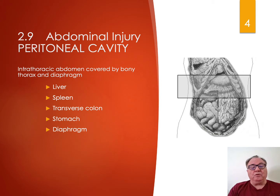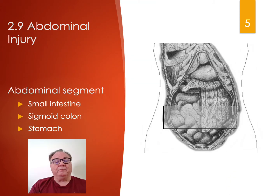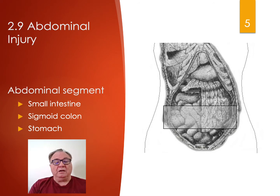There's the intrathoracic abdomen, covered by the bony thorax and diaphragm, located in the upper part of the abdomen. It includes the liver, spleen, transverse colon, stomach, and diaphragm. Then there's the abdominal segment where we have our small intestine, the sigmoid colon, and the stomach.